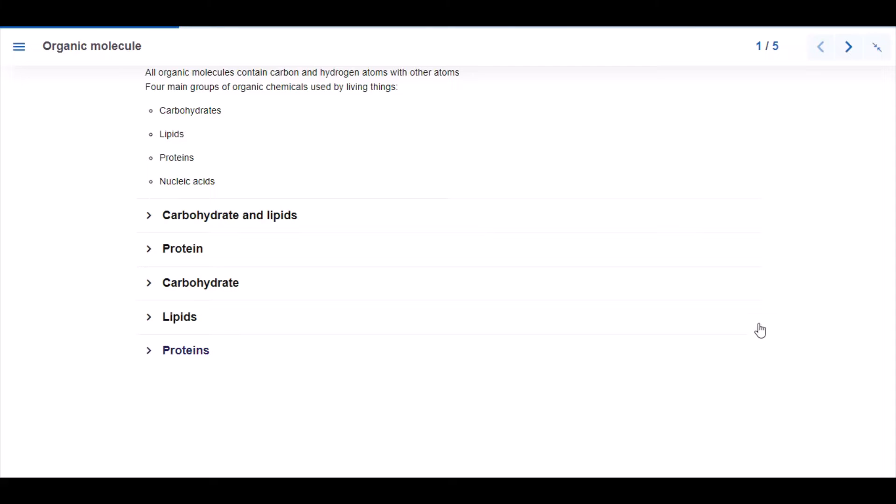Hello students, welcome back. Today we'll be looking at biological molecules, starting with organic molecules. All organic molecules contain carbon and hydrogen atoms with other atoms. Four main groups of organic chemicals used by living things include carbohydrates, lipids, proteins, and nucleic acids.